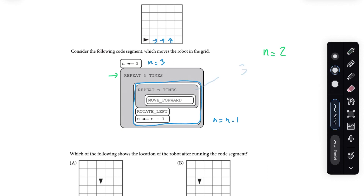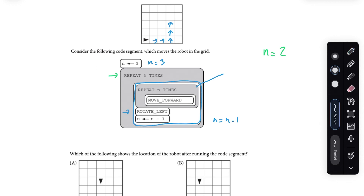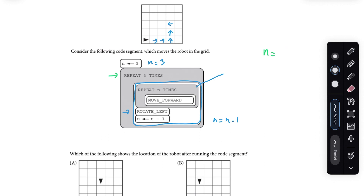Once again, we do the inner for loop first. Now n is equal to two, so we're only going to be moving forward two times — one, two. Then we rotate left again, and we set n equal to n minus one. So now it is one.